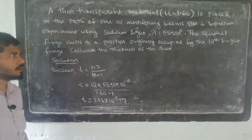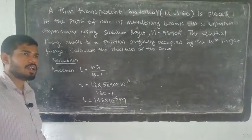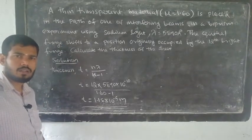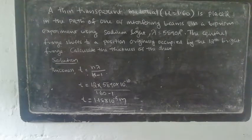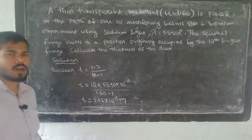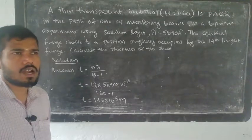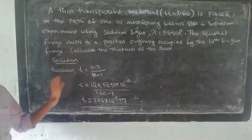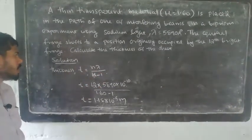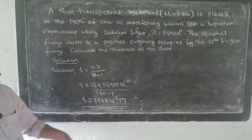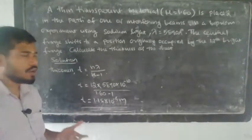We have discussed this — the lateral shift. The central fringe shifts to the position originally occupied by the 12th bright fringe. We need to calculate the thickness of the sheet. This is very important to remember: when we calculate thickness, we ask how many fringes are shifted. The central fringe shifts 12 fringes, so the lateral shift corresponds to 12 fringes.